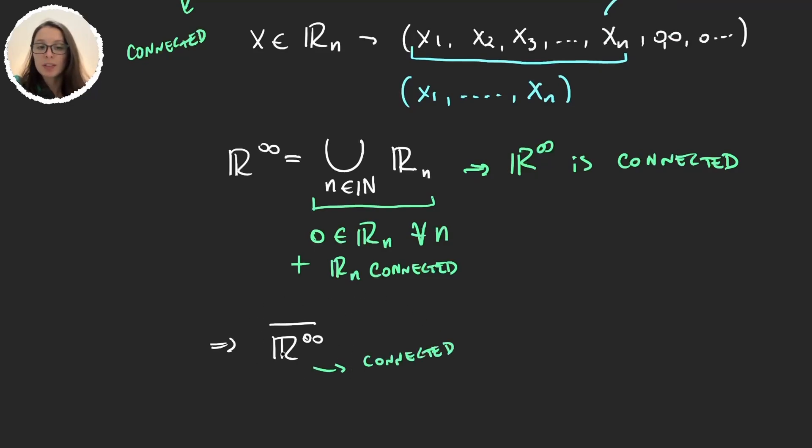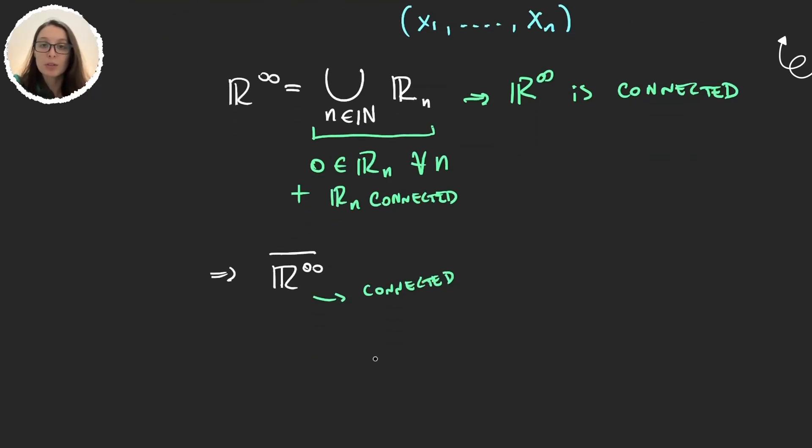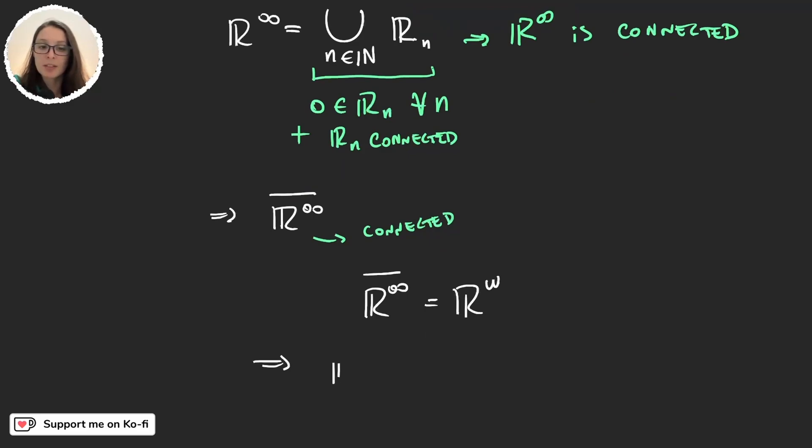But remember what set was this? Well the closure of R_n we saw in a previous video that was R_n in the product topology, and so with all this we have that R omega is connected, and this is exactly what we were trying to prove.